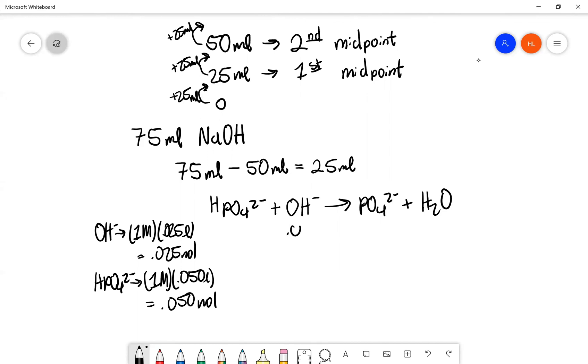And then 0.050 moles. So if we plug this into the equation, again, it's very similar to the past two that we did. We can subtract the amount that we are neutralizing. That's 0.025 moles. And then 0. And then we're adding it to this side. So 0.025 moles. 0.025 moles.